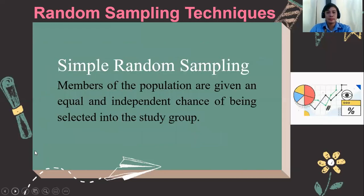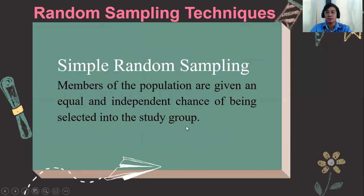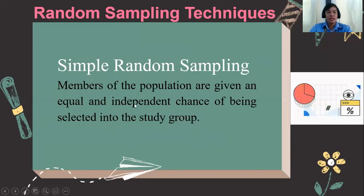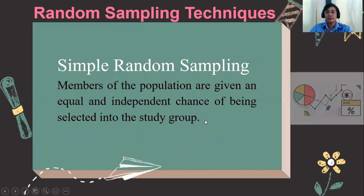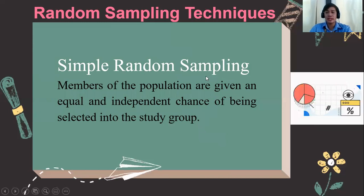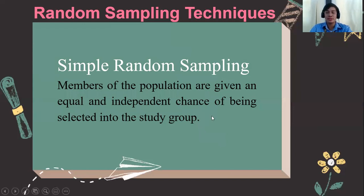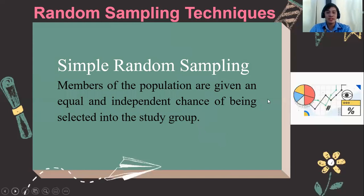Simple random sampling is a technique in which the members of the population are given an equal and independent chance of being selected in the study group. It is also known as the lottery method or the quiz bowl method. For example, if you are the researcher performing simple random sampling, you write all the names of your population and then select — say, 30 participants — by lottery. Every member of the population has an equal chance to be selected.